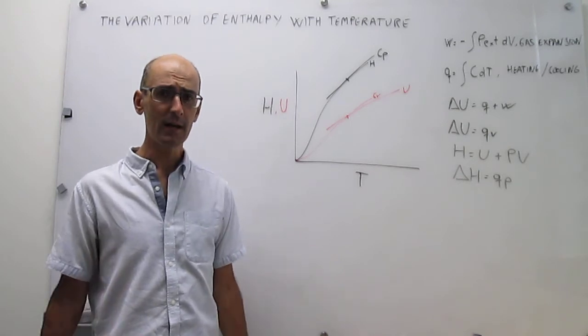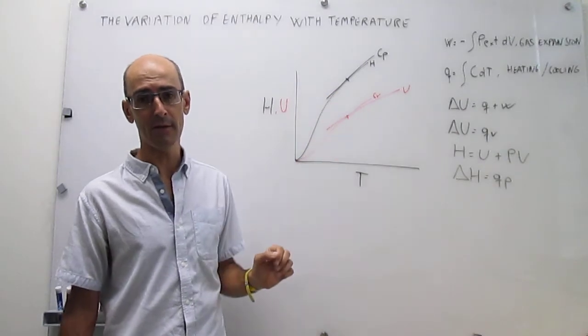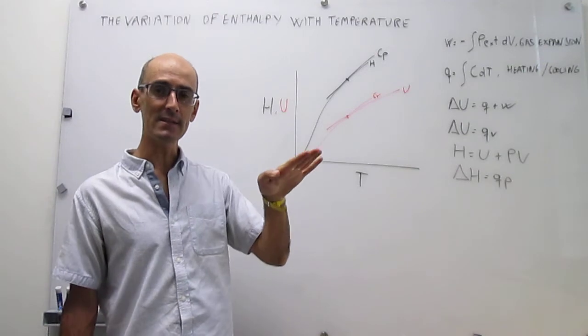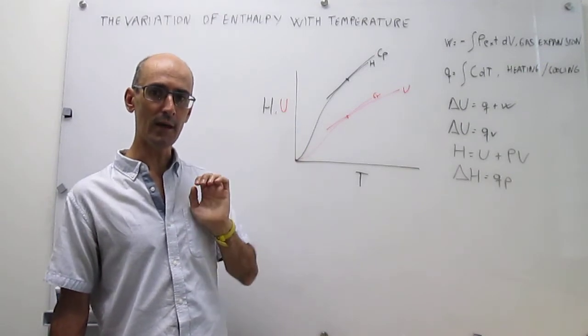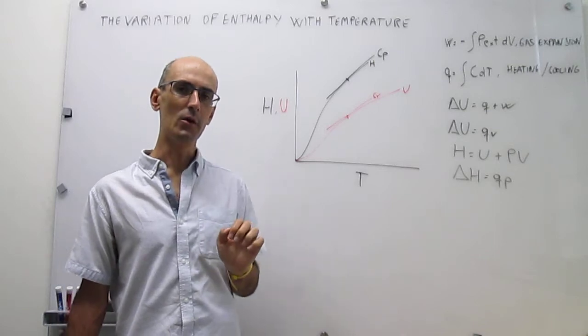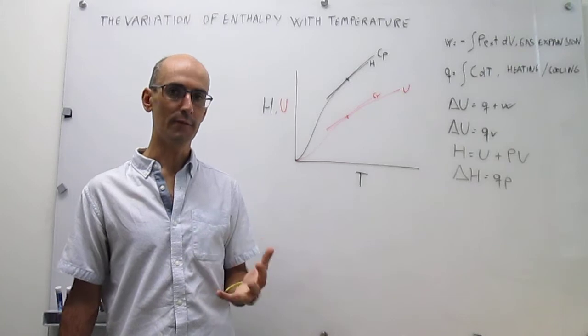Also, we know that the black line enthalpy should be above the red line for the internal energy, and then the slope of the enthalpy line should also be larger than the slope of the internal energy line at the same temperature for most substances.